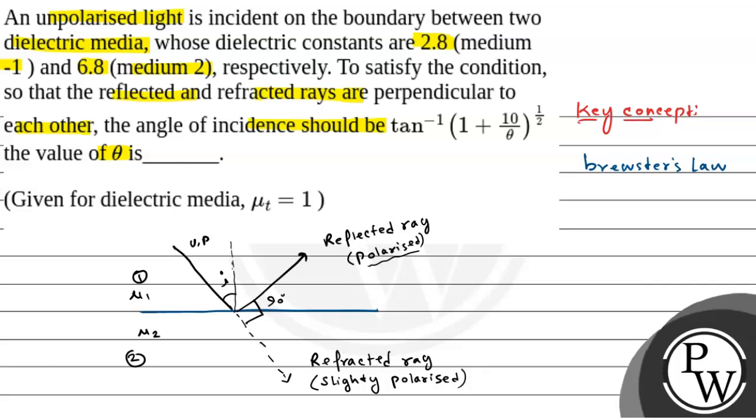In this case, tan i equals μ2 by μ1, and the angle i we can call Brewster's angle.